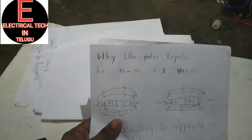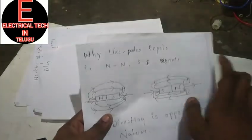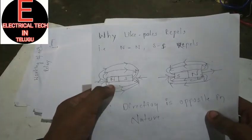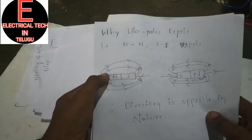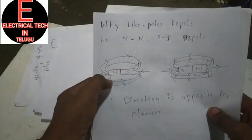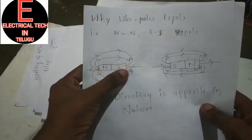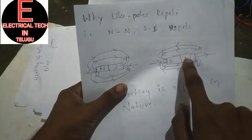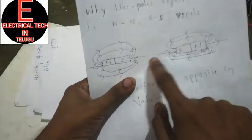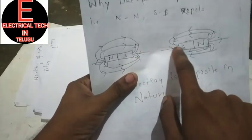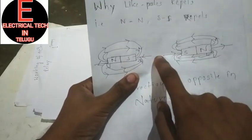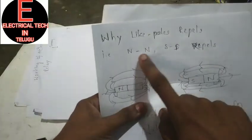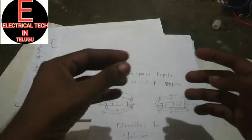Now we have two like poles — north pole and north pole, or south pole and south pole. When you look at the magnetic line directions, they flow north to south, so the two directions are opposite. This means north pole–north pole or south pole–south pole repel.